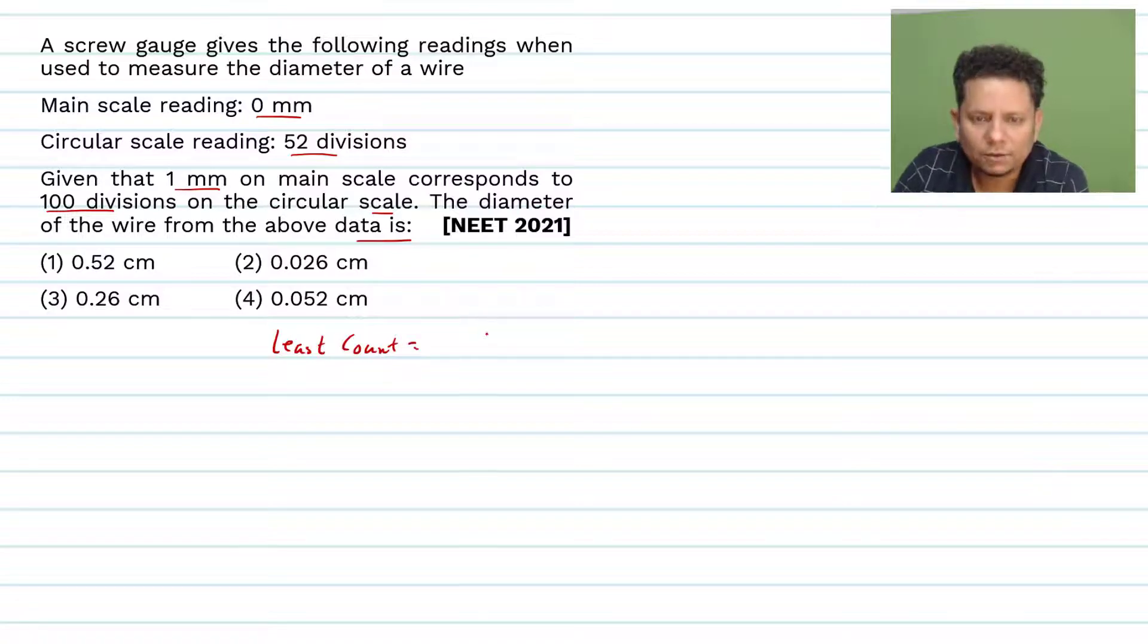Now we can say the least count will be equal to 1 mm divided by 100, so that will be equal to 0.01 mm. This is your least count value.